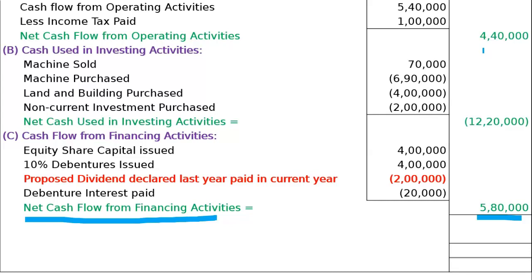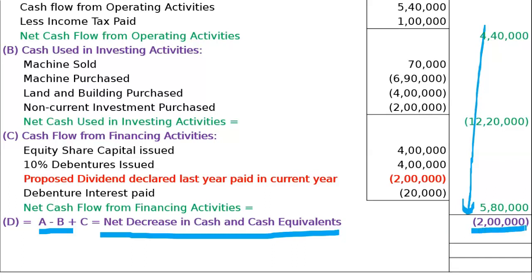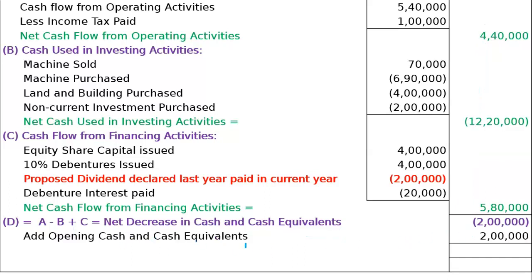A minus B plus C equals D. Calculate all three together - it came to minus 2 lakh. Decrease in cash and cash equivalents minus 2 lakh. Add opening cash and cash equivalents. Check the question - opening cash given: 2 lakh opening, closing nil. So here nil will come. Minus 2 plus 2 equals nil. This is closing cash and cash equivalents. It is tallying!